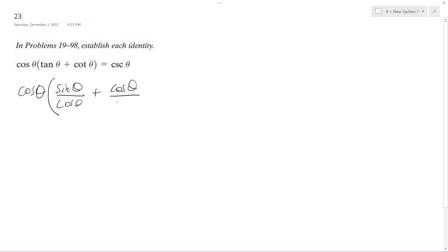And then cosine theta over sine theta for the cotangent is equal to one over sine theta, which is what the cosecant breaks down to.